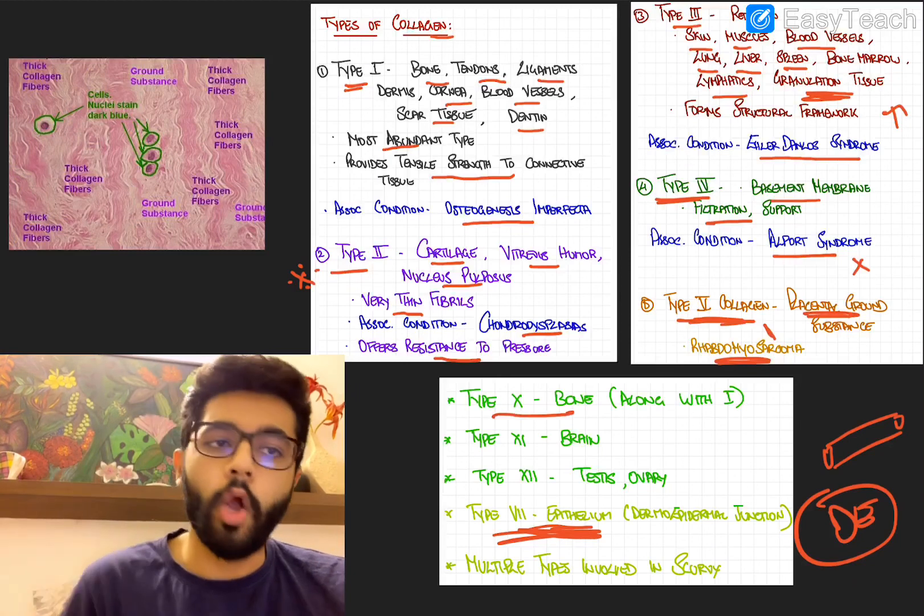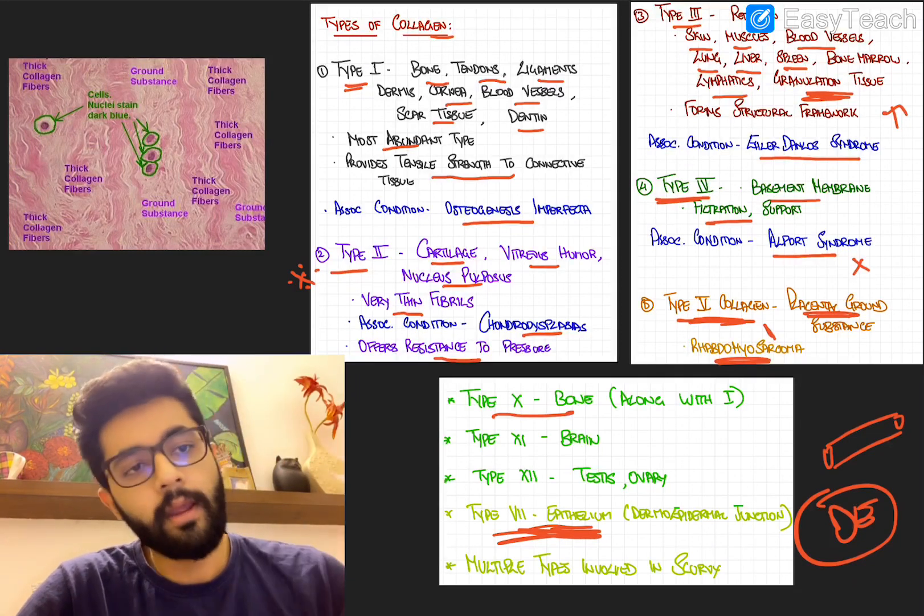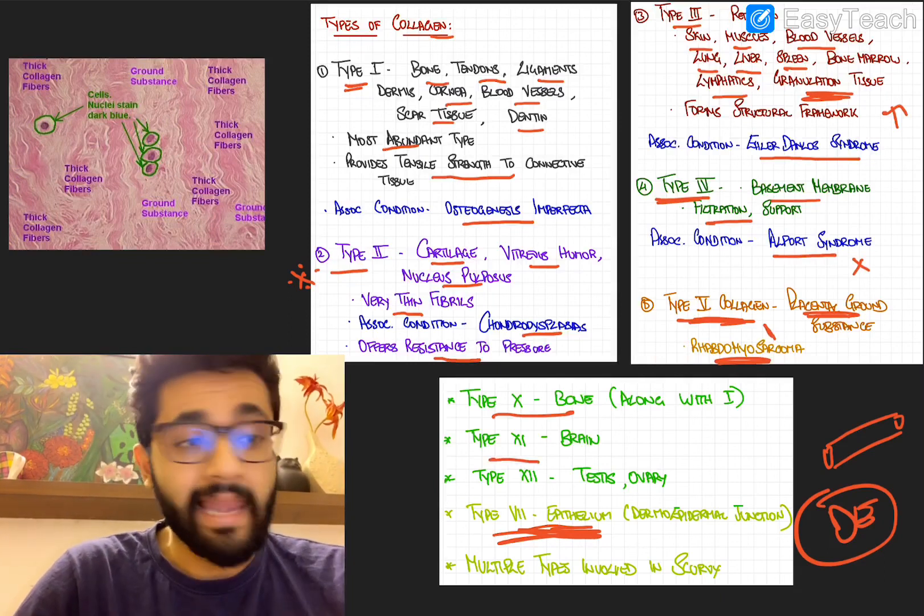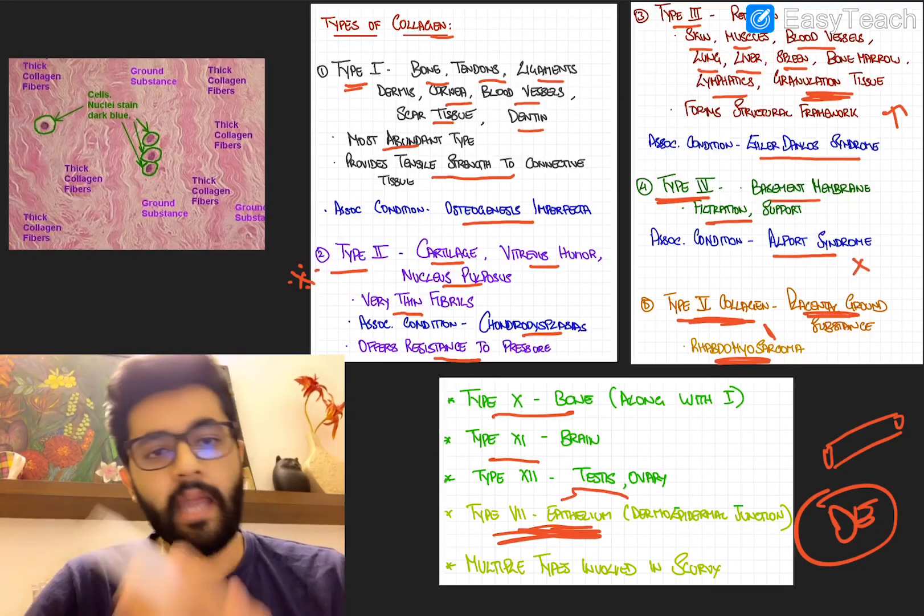Type 10 along with type 1 is seen at the bone. Remember primarily bone is type 1 but type 10 can also be seen and it helps in cartilage formation. Also type 11 collagen is seen in the brain and type 12 collagen is seen in the testis and ovary.